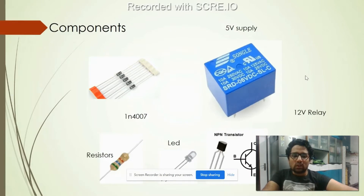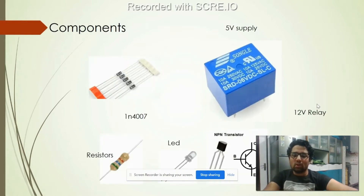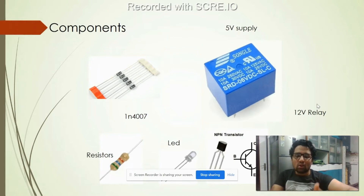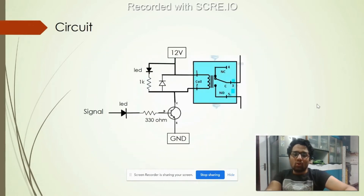The basic circuit we are going to build uses a transistor as a switch. The components we are going to need are: a diode, a 12V relay, an NPN transistor, LEDs, resistors, a 5V signal from the microcontroller, and a 12V VCC supply. We are going to use a 12V relay.